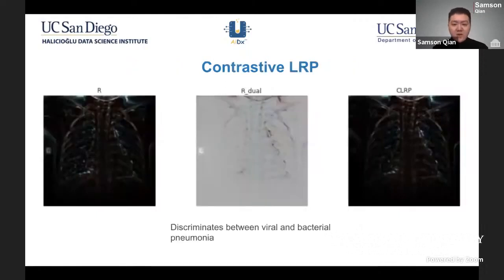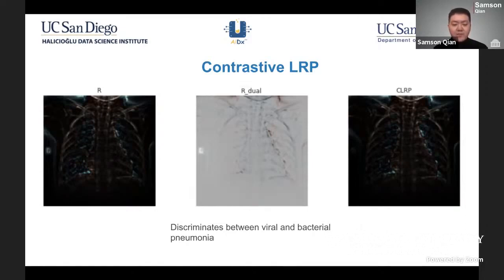The last variation, known as contrasted LRP, is a slight modification to the original LRP method. It takes the relevance scores and applies a modification that distinguishes the relevance between various types of classes. This allows you to identify and distinguish between viral and bacterial pneumonia much more clearly using these different types of relevance scores.